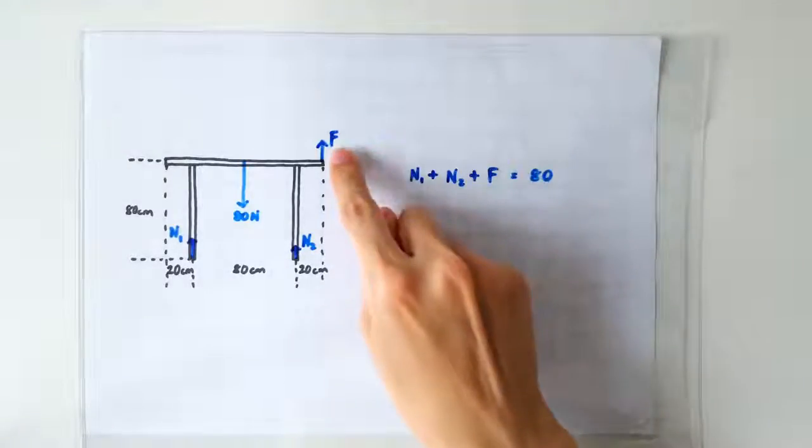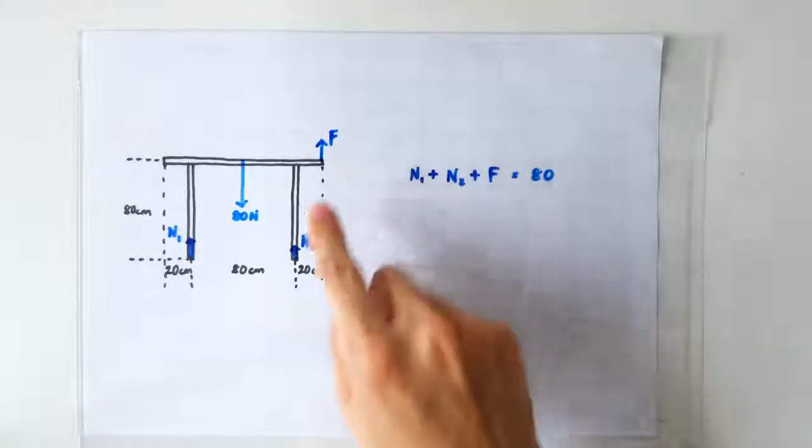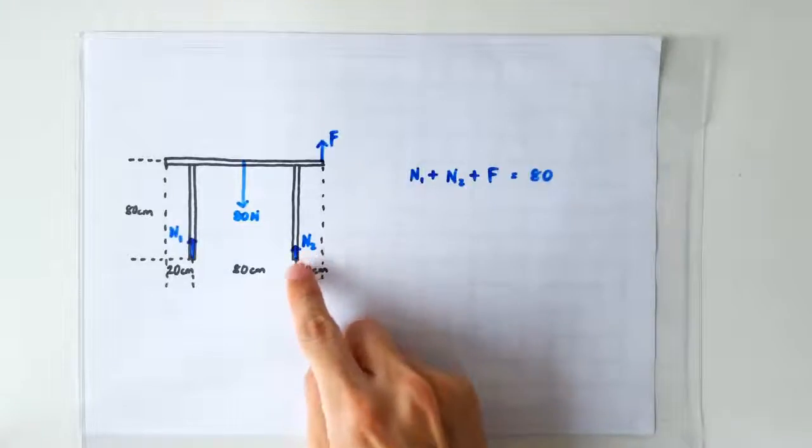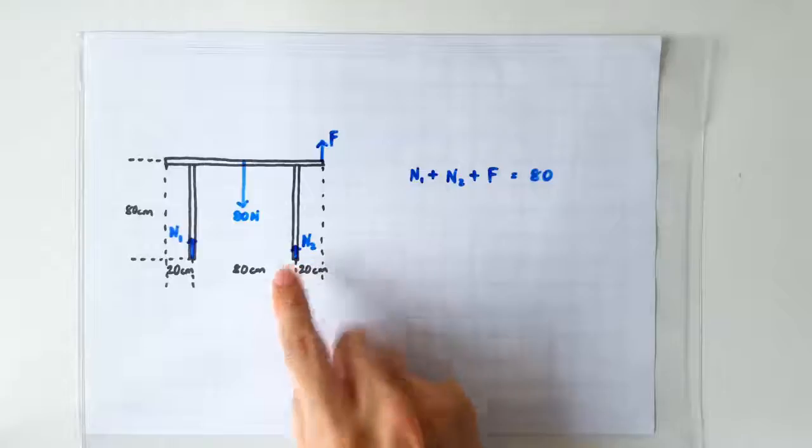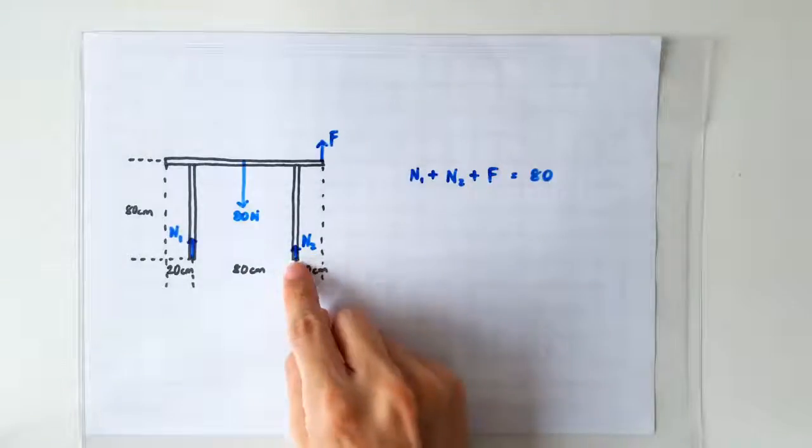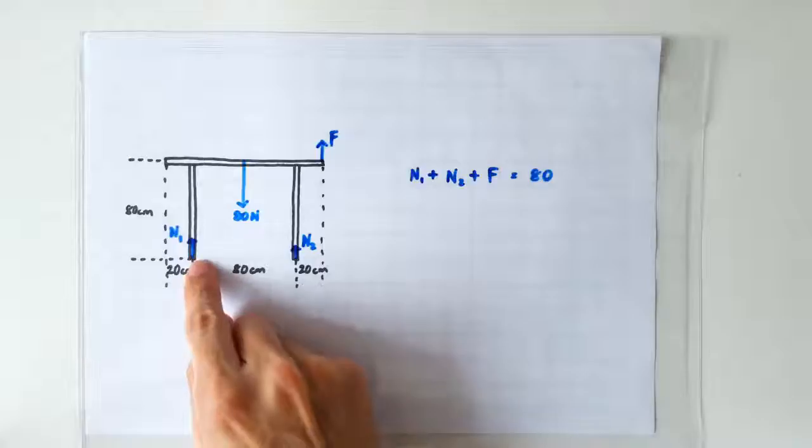Secondly, with the lifting force at the right end of the table, the table will not be pressing as hard against the floor on the right leg of the table. So the normal contact force on the right leg of the table will be smaller than the normal contact force on the left leg of the table.